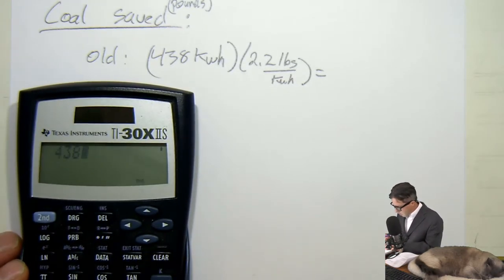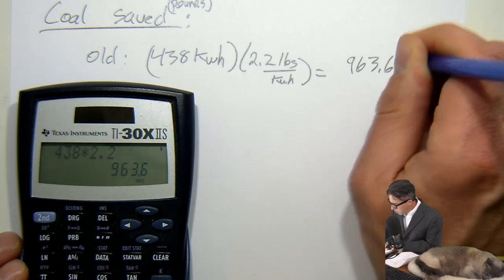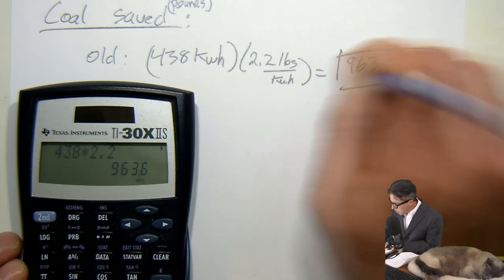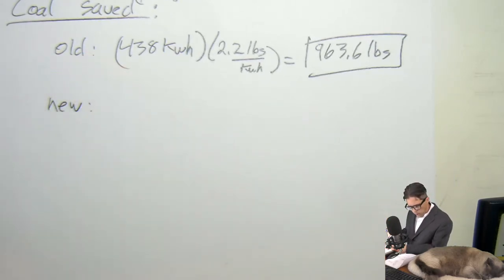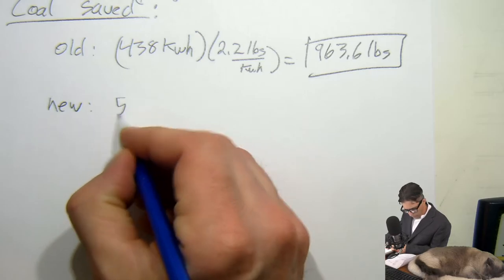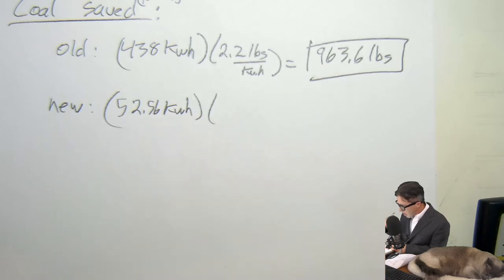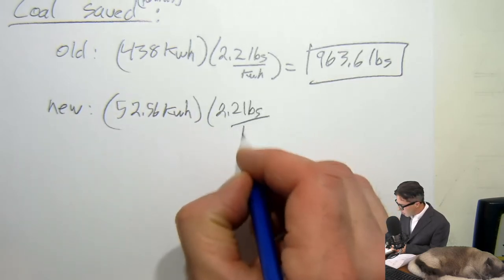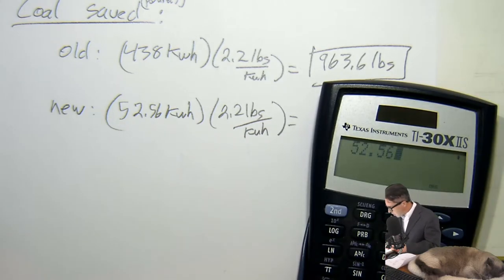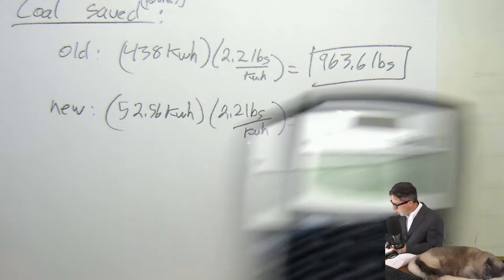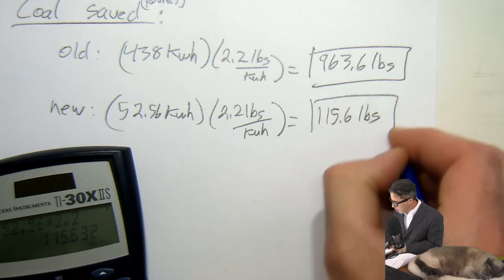And then the new one is 52.56 kilowatt hours, 2.2 pounds per kilowatt hour. So I take 52.56 times 2.2 and I get 115.6 pounds. That's the old one.